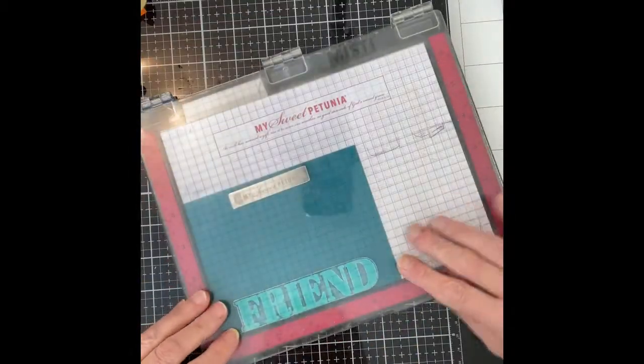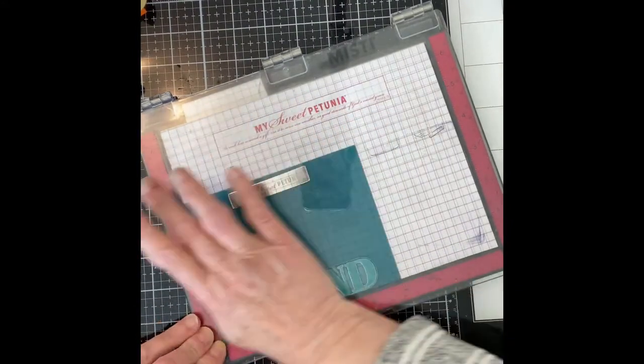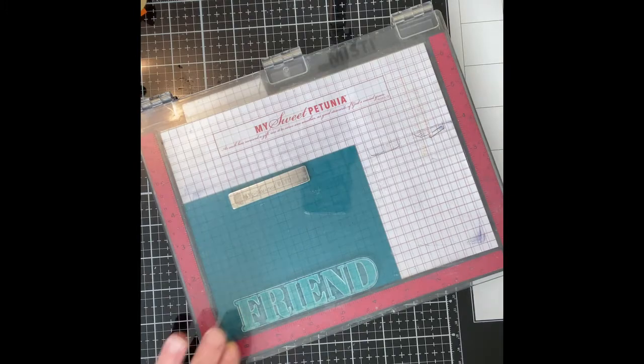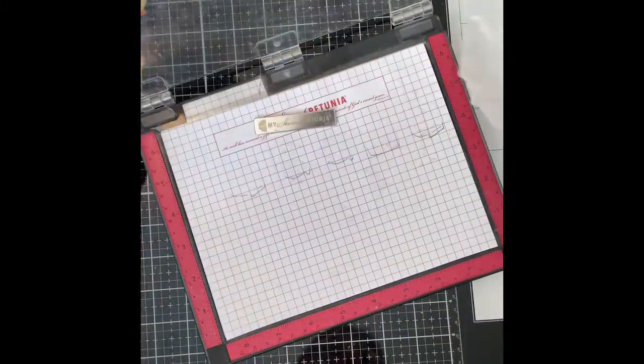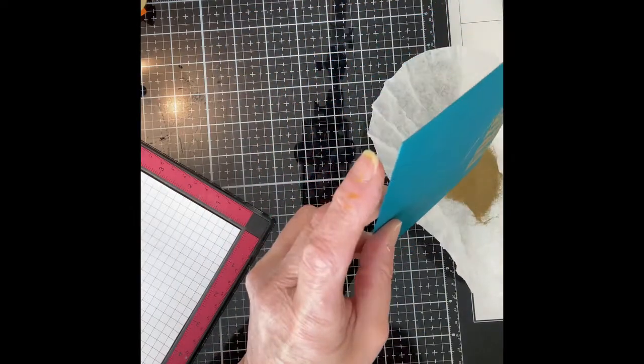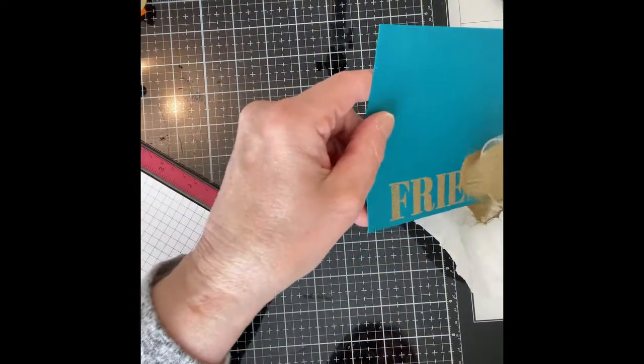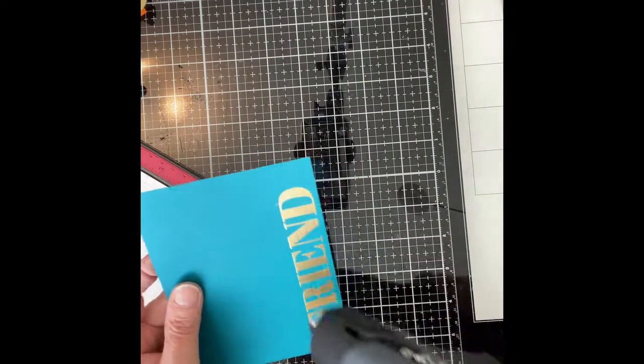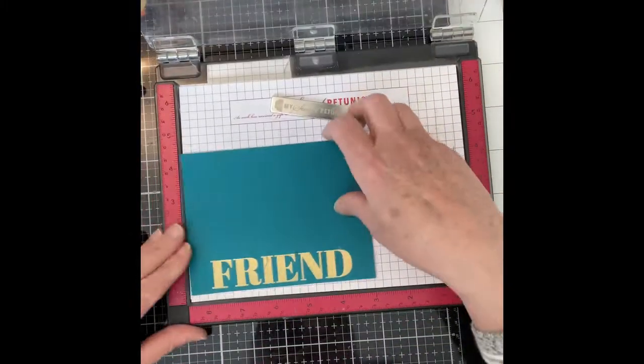Typically, I would stamp this with Versamark ink, but apparently I have packed it away as I'm in the process of getting ready for a move. Distress Oxide inks take a while to dry, so it is a good substitute for Versamark, and I stamped this with my peacock feathers and then coated it with Ink On 3's Gold Rush Embossing Powder.